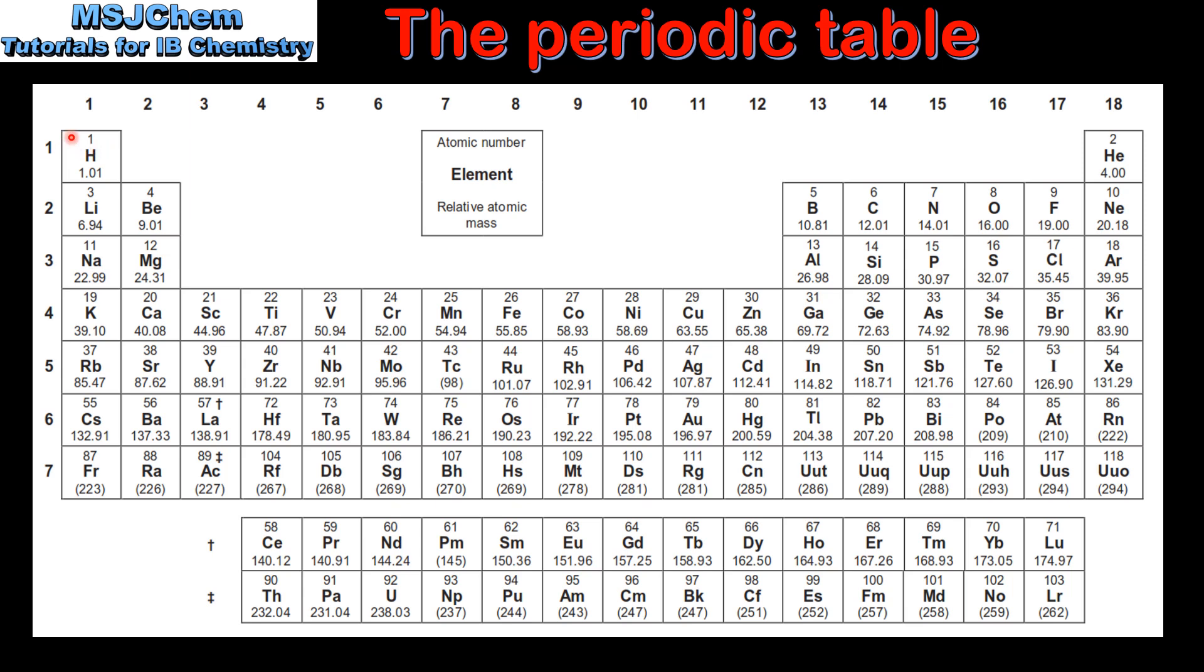Starting with atomic number 1 which is hydrogen, then we have atomic number 2 helium, atomic number 3 lithium, atomic number 4 beryllium, atomic number 5 boron, atomic number 6 carbon and so on.